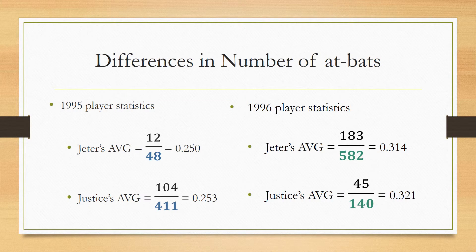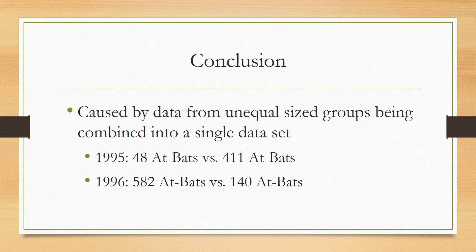So what can we conclude? The conclusion is that Simpson's Paradox in this case is caused by data from unequal-sized groups being combined into a single data set. In this case, it's the number of at-bats for each player — 48 versus 411 in 1995, and 582 versus 140 in 1996. Now that we've seen this example, we can move on to another one.